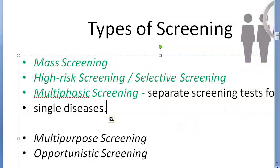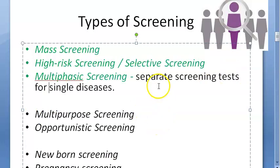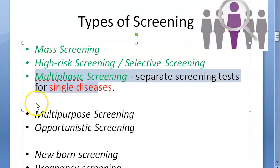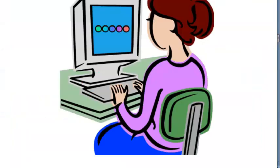Multiphasic screening means separate screening tests for a single disease. For single disease only, they use multiple screening tests. Why would they do this? It has enjoyed considerable popularity, but the only thing is it's going to be very expensive without any observable benefit — for a single disease, you're doing multiple tests.